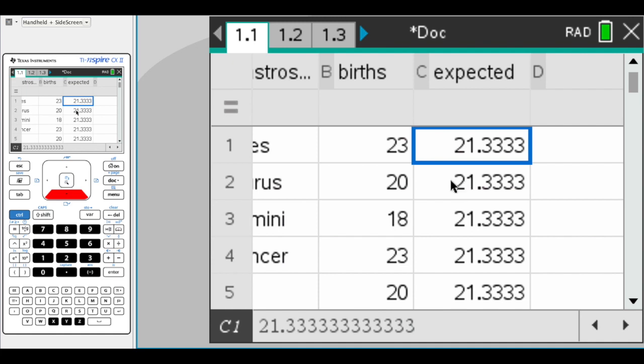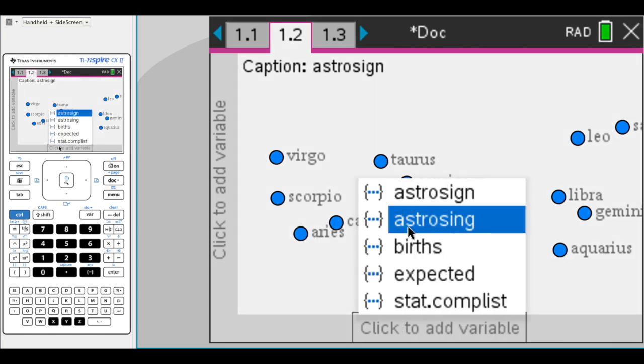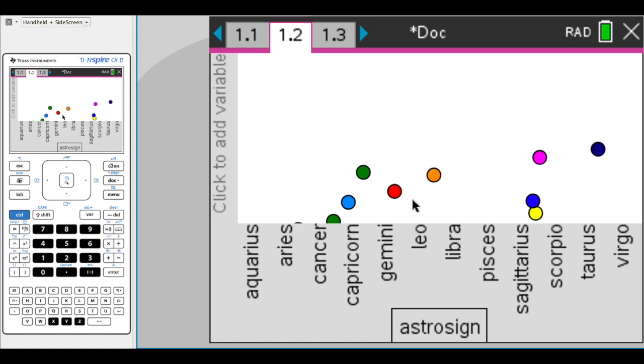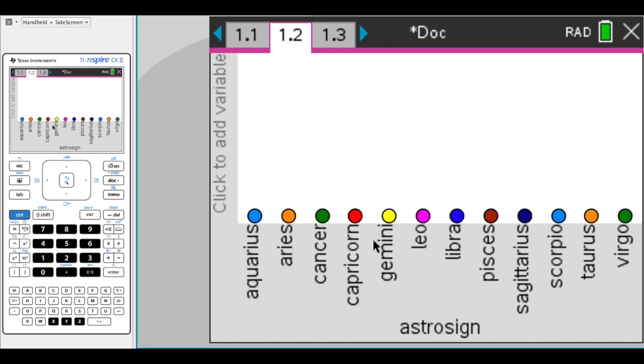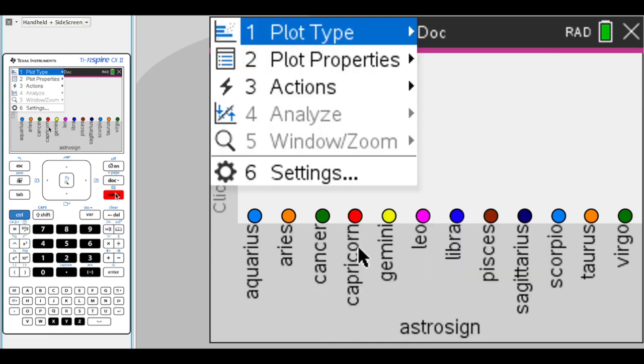Now it would be nice to see a histogram. If you hit control doc, we're just going to add a new document, and we're going to add a graph setting. What I want to graph is our astrology sign. Now notice, if we want to make a bar chart instead of a box and whisker plot, or a histogram in this case, what we need to do is go to menu, and then we go to plot properties.